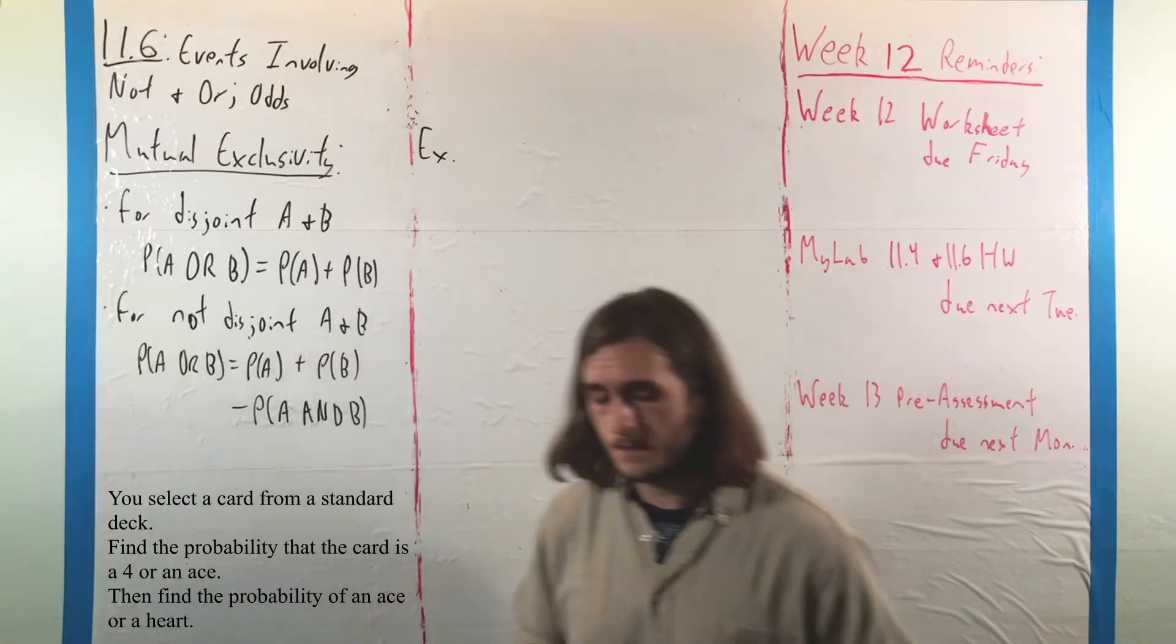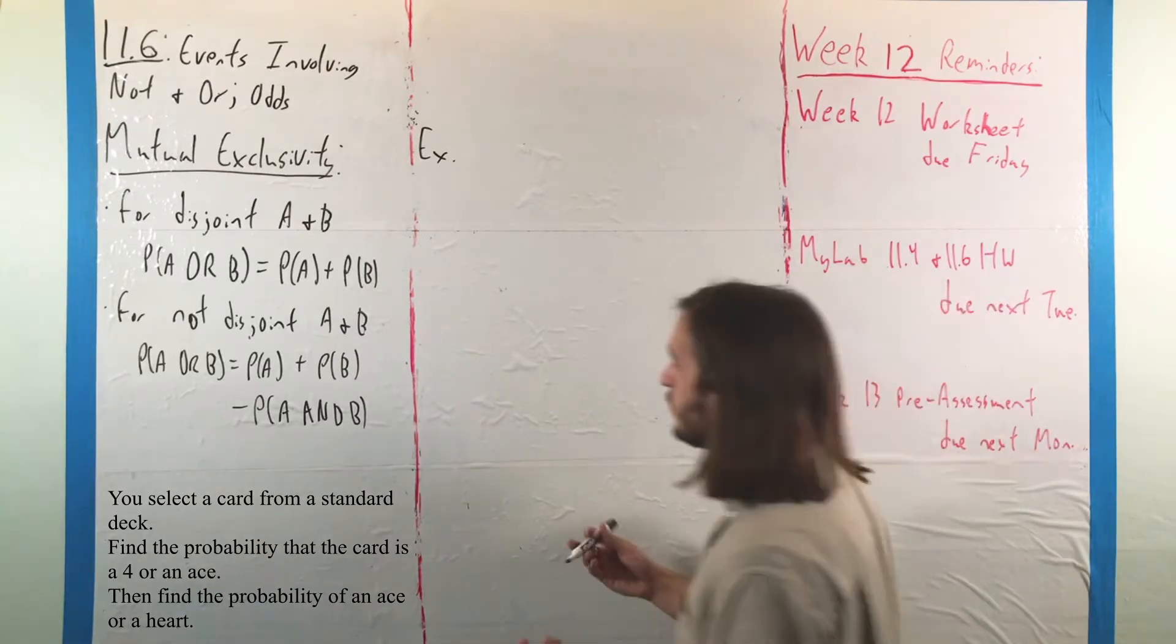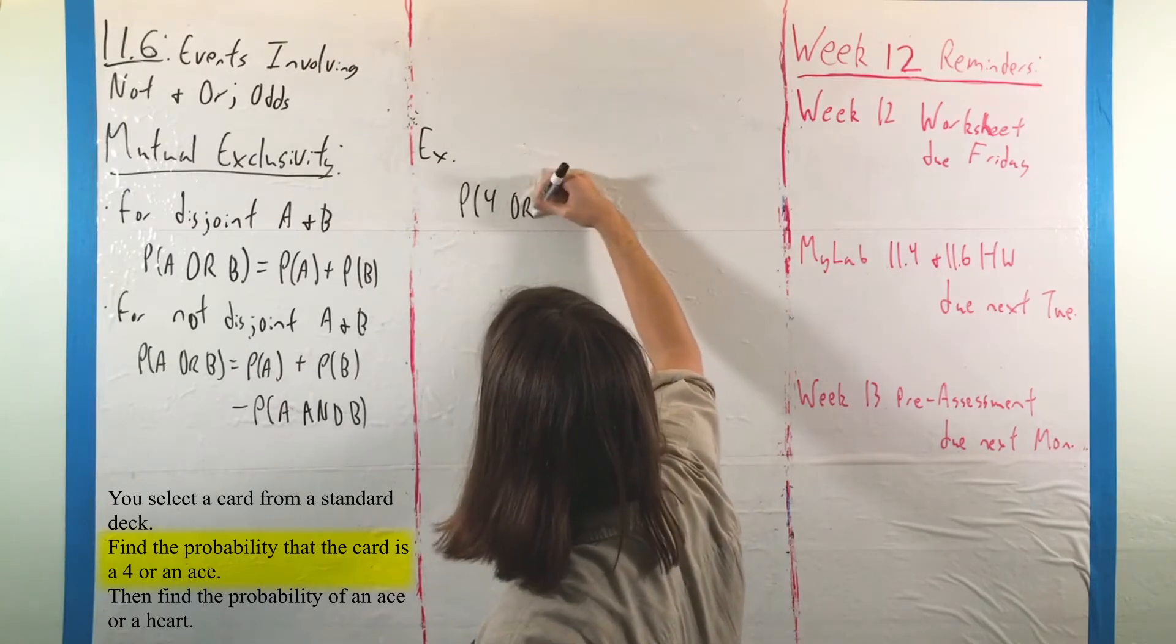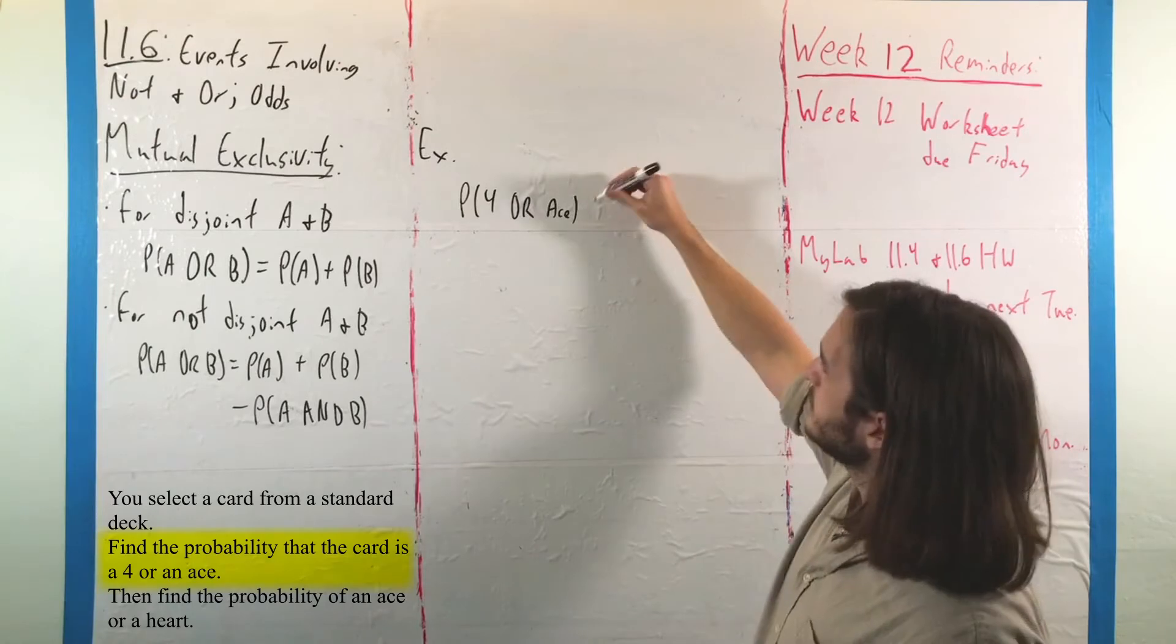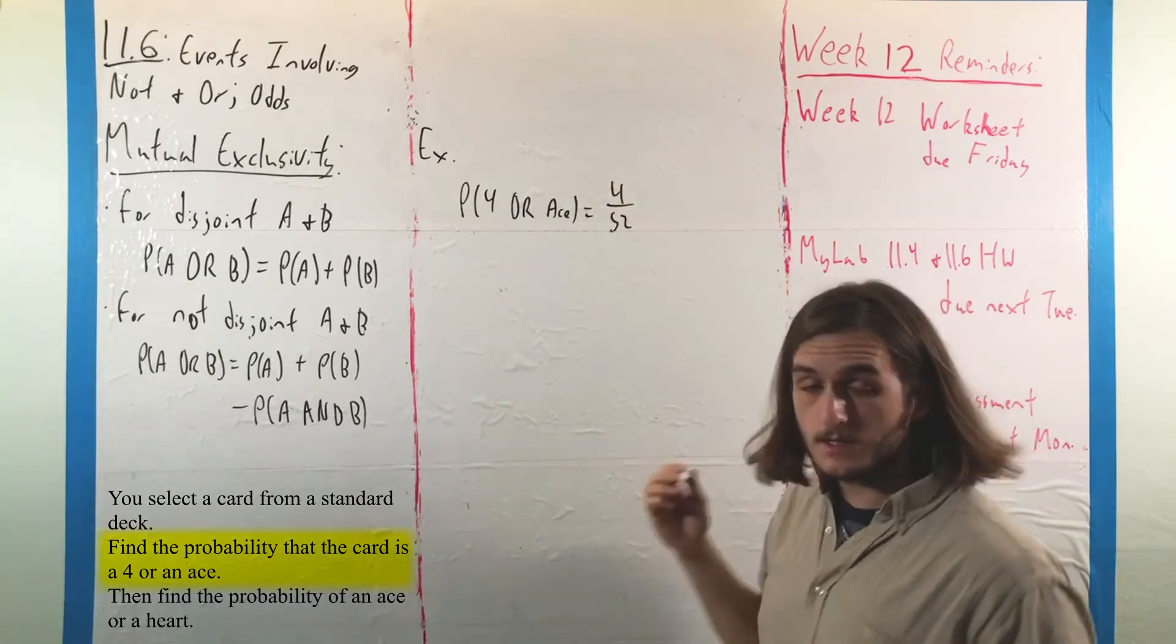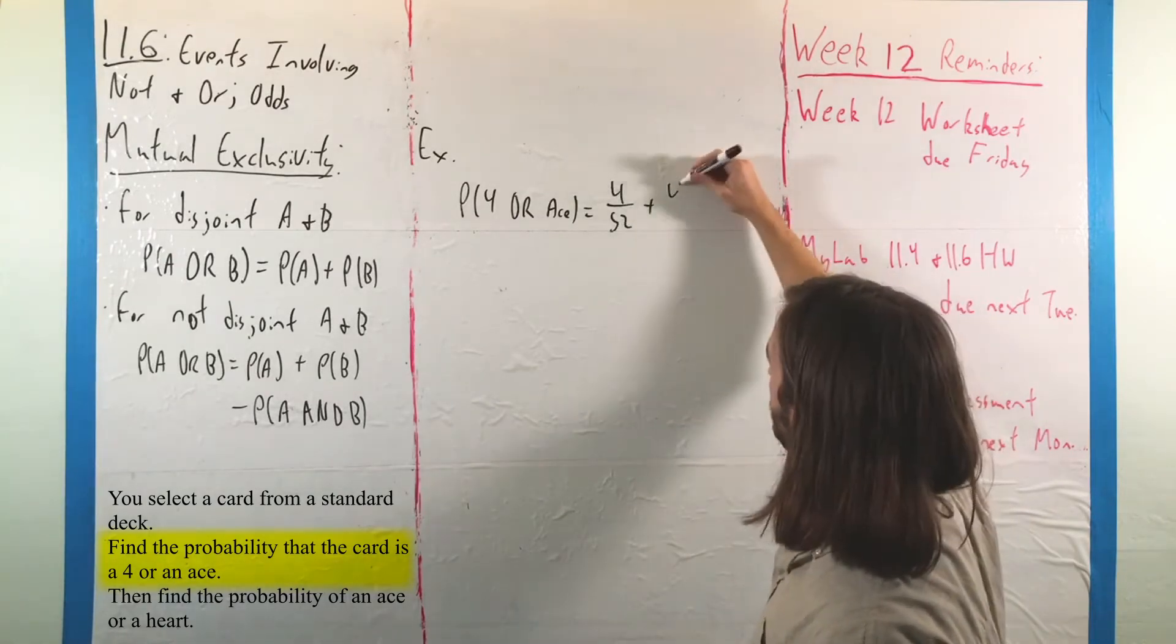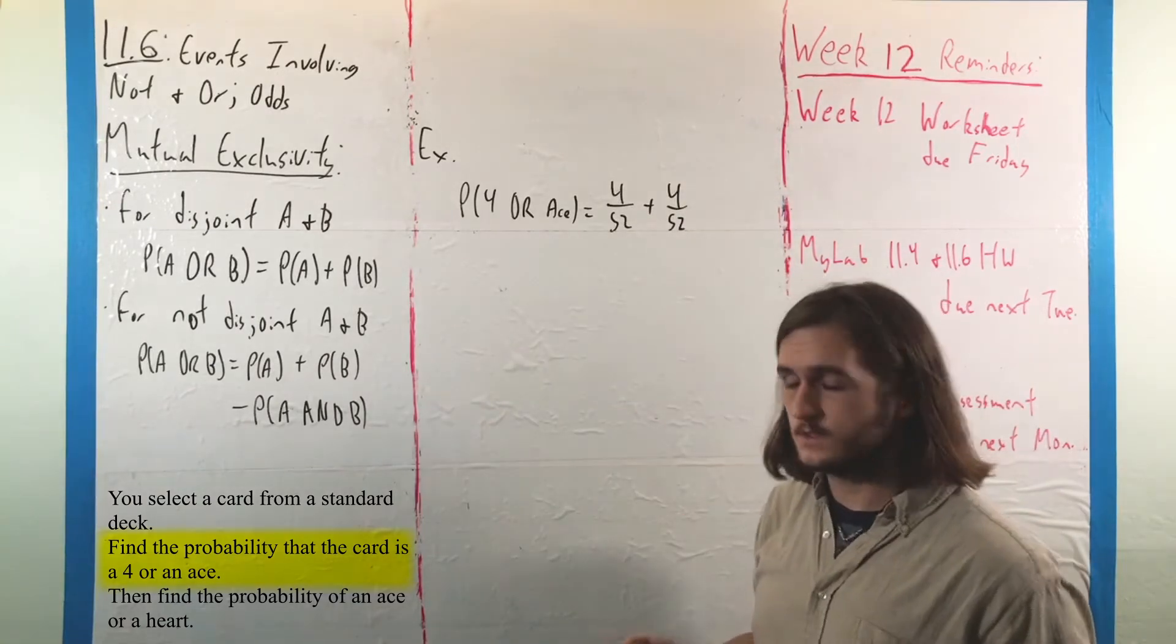Now, with this, what we have to understand is that if we want 4 or ace, we have 4 out of 52 cards that are 4s, or 1 in 13 if you prefer, along with 4 out of 52 cards that are aces.